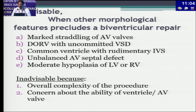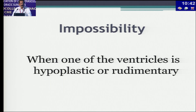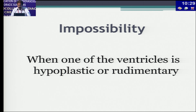In all these three situations, both ventricles are well developed, but it is inadvisable to do a biventricular repair because the overall procedure to achieve it is complex, and at the end you have concerns about the ability of the ventricle or AV valve to function optimally. It is impossible when one of the ventricles is hypoplastic or rudimentary, and surgeons cannot produce a ventricle with a normal volume-pressure relationship.